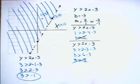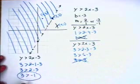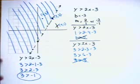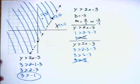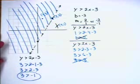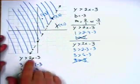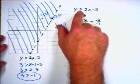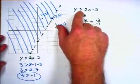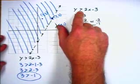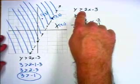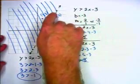Choosing points like we did is all well and good, but there is a better method — it just involves a little extra thought. Points on the line are not going to work because that would require an equal sign. So if the sign is a greater than or a less than, the line will be dotted.